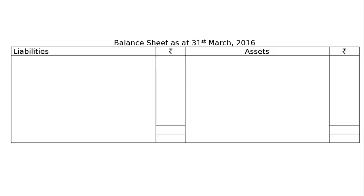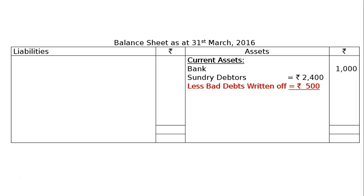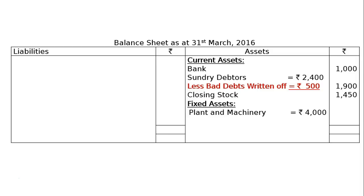Balance Sheet as at 31st March 2016 — Asset side, current assets: bank rupees 1,000; sundry debtors rupees 2,400 less bad debts written off rupees 500, giving rupees 1,900 in the final column; closing stock rupees 1,450. Fixed assets: plant and machinery rupees 4,000 less depreciation rupees 400, giving rupees 3,600. The total of the asset side is rupees 7,950.